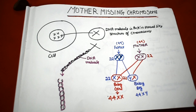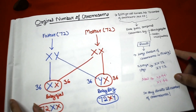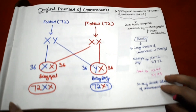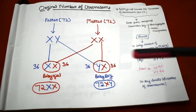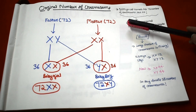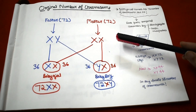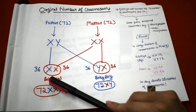This is a concept we already know from school cell cytology. But now, what is the mother missing chromosome? Five thousand five hundred years ago, ancient human beings had a different original number of autosomal chromosomes — not 44, but 72. The father or male had 72 autosomal chromosomes plus X and Y sex chromosomes. The mother or female had 72 autosomal chromosomes plus XX sex chromosomes.